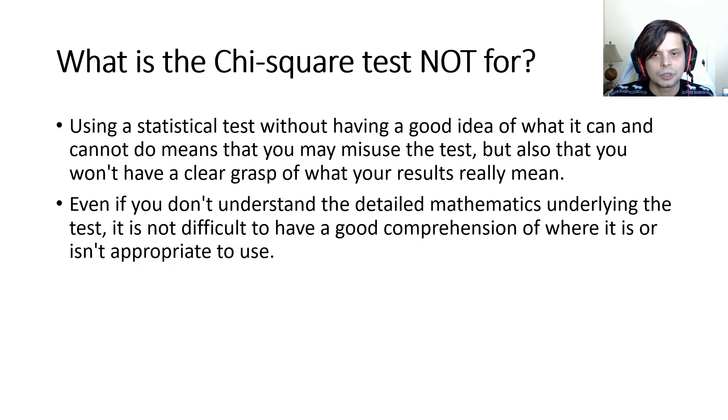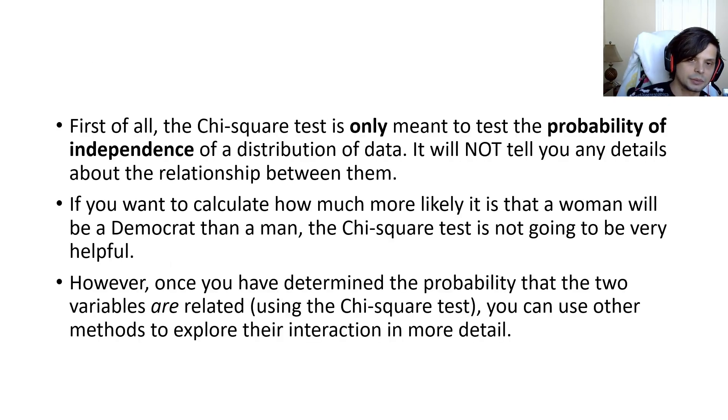So using statistical tests without having a good idea of what it can and cannot do means that you may misuse the test. But it also means that you won't have a clear grasp of what results would mean. So even if you don't understand the detailed mathematics underlying tests, it's not difficult to have a good comprehension of where it is or is inappropriate to use. Remember that chi-square is not for interval ratio comparison. I mean, you can code it down to category from interval ratio, so you can do it still. But if you have that kind of data, you're better off doing another type of analysis. So first of all, the chi-square test is only meant to test the probability of independence. It will not tell you any details about the relationship between them. In other words, you notice one increases, the other decreases. You won't get that from chi-square. If you want to calculate how much more likely it is that a woman will be a Democrat than a man, then the chi-square test is not going to be very helpful. However, once you have determined the probability that two variables are related using that chi-square test, you can use other tests to explore that interaction in more detail.